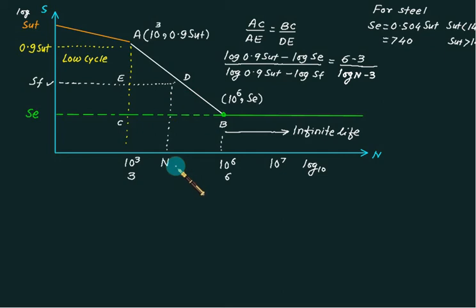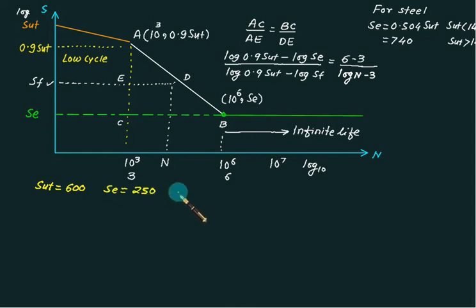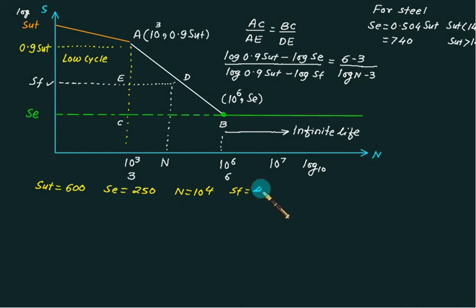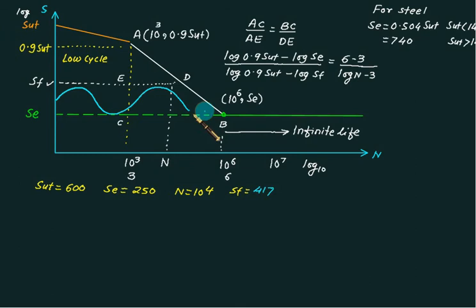For example, given SUT = 600 MPa, SE = 250 MPa, and an expected life of 10⁴ cycles, substituting into the Basquin equation gives SF ≈ 417 MPa. For infinite life, the stress variation fluctuates from SE to SF, where the given SF is also called sigma_max and the minimum value is SE.